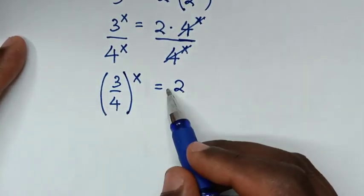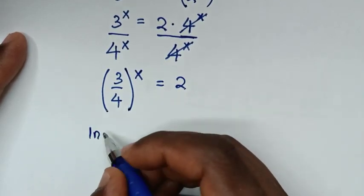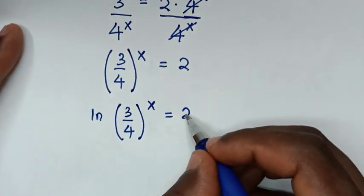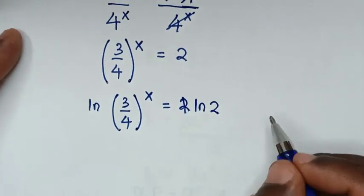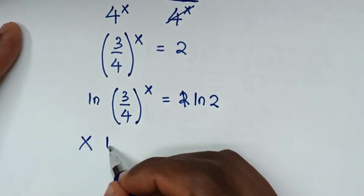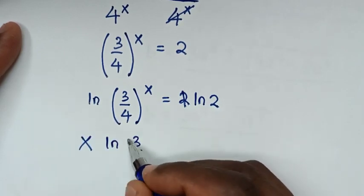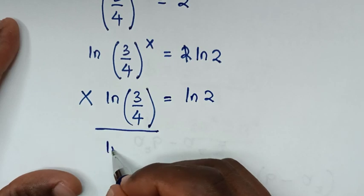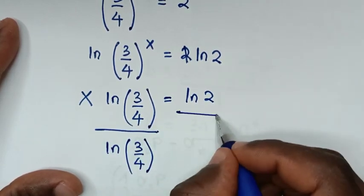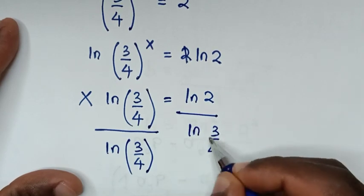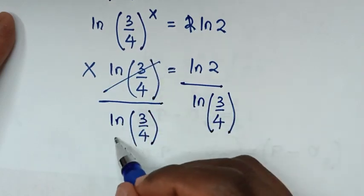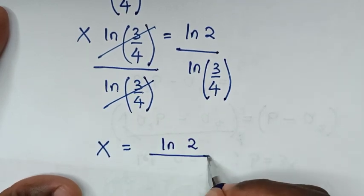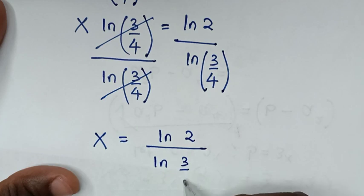Applying ln to both sides: x × ln(3/4) = ln(2), so dividing both sides by ln(3/4) gives x = ln(2) / ln(3/4). This is the first value of x.